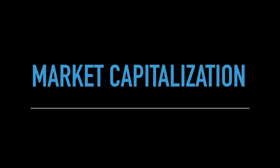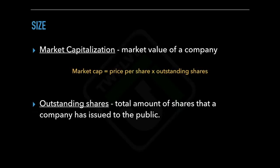Choosing which stock to purchase can be a little overwhelming, but to help with the process, it's important to understand the characteristics of the stock that we are choosing and how the company's size correlates to the risk and reward potential. This can help us choose stocks based on our goals, time horizon, and risk tolerance. When talking about size, we are typically referring to its market capitalization, or the value of that company on the open market, calculated by taking the current price per share and multiplying it by its outstanding shares.